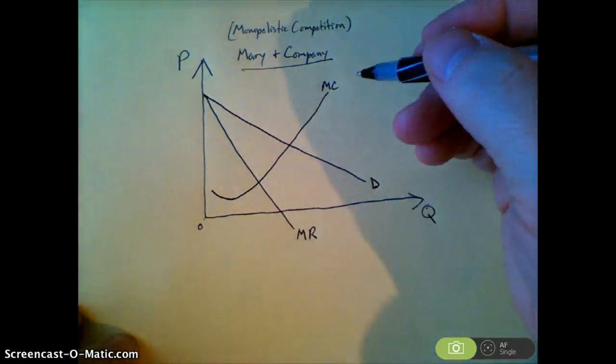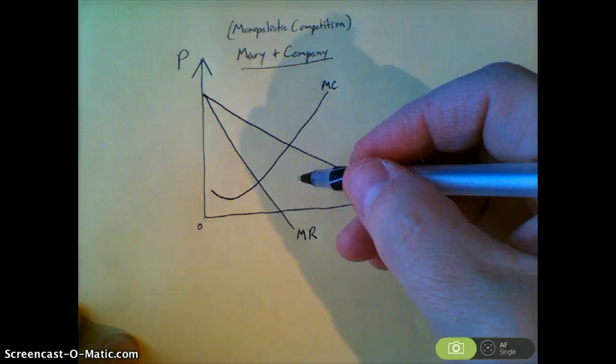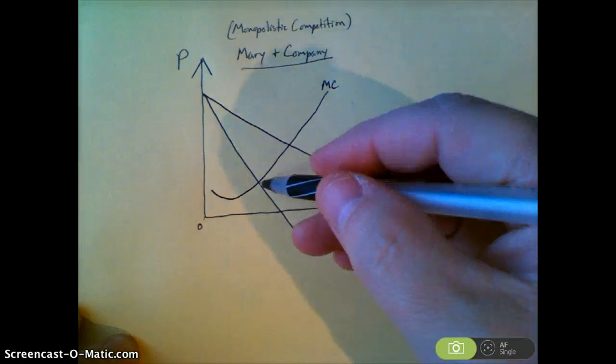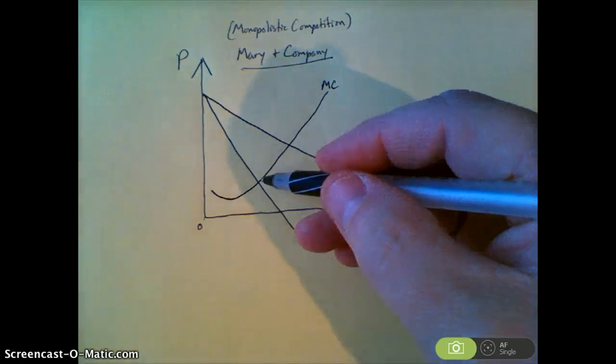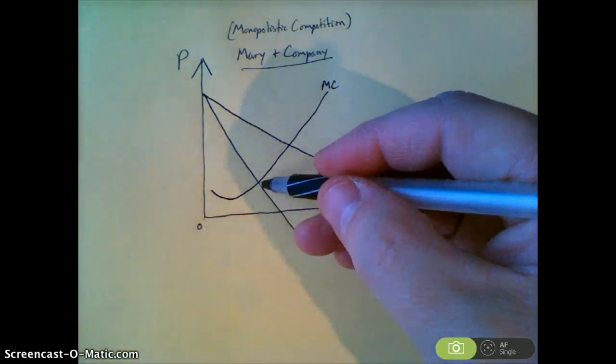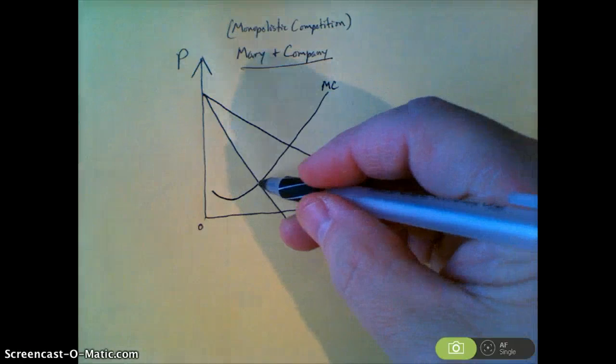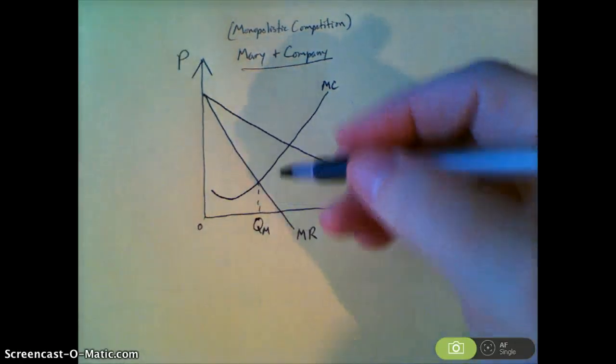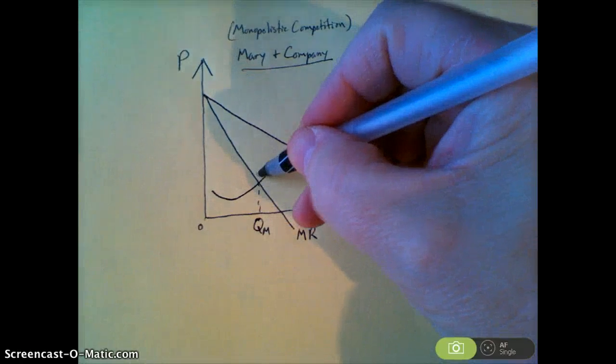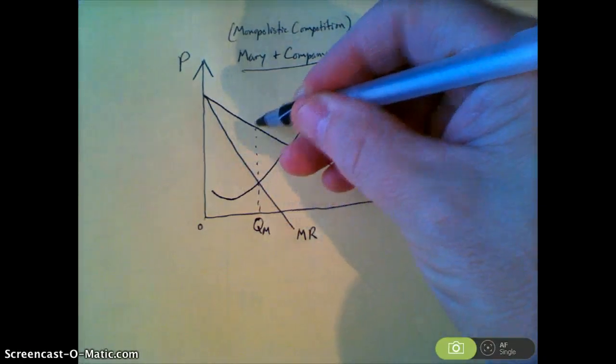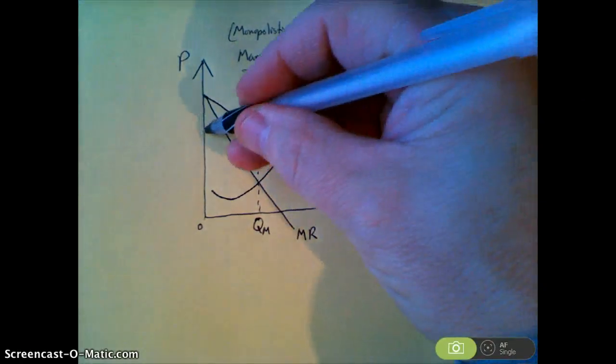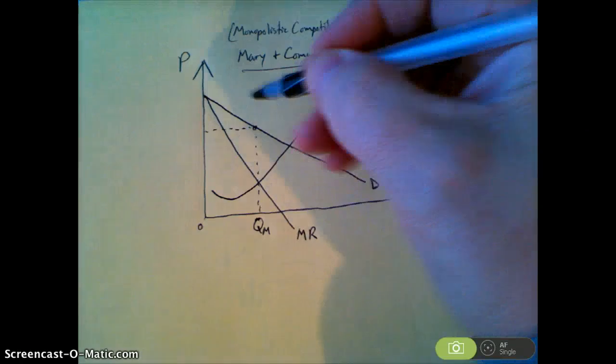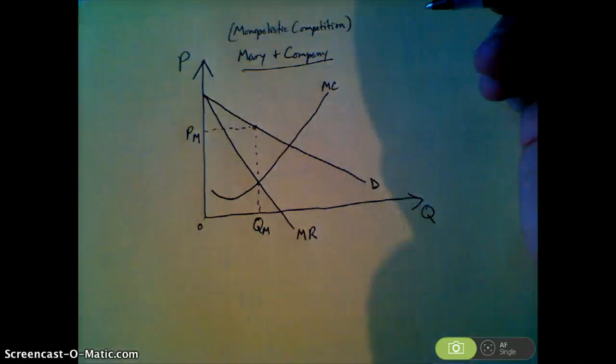Now, just like every other market structure, the profit-maximizing level of output or quantity is where the marginal revenue and marginal cost are equal or where the MR and MC curves intersect. So we're going to call that QM. And then the price they charge comes from the demand curve at QM, and we call that PM.